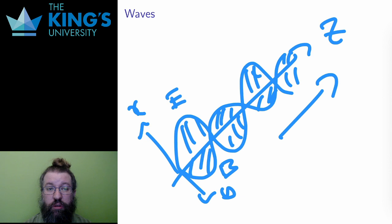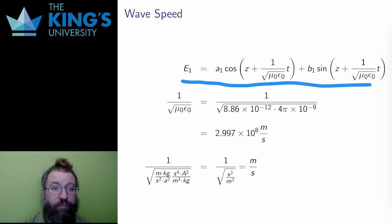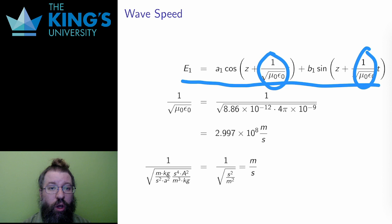Alright, one last question. If they move, how quickly do they move? What is the wave speed? How fast do they propagate in a vacuum? Well, here is the E function. And the B function was the same, but just for reference, here is the electric field. The wave speed of this has to be the coefficient of the time variable,